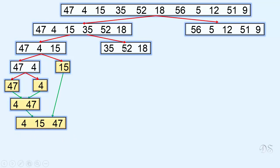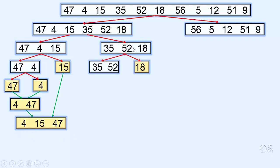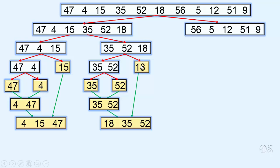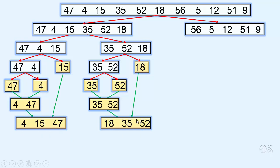Now we come to the next sublist. It is divided, then divided again. These two sorted lists are merged, then this sorted list and this sorted list are merged, so this sublist has become sorted. These two sorted sublists are then merged and we can see that this list has become sorted.